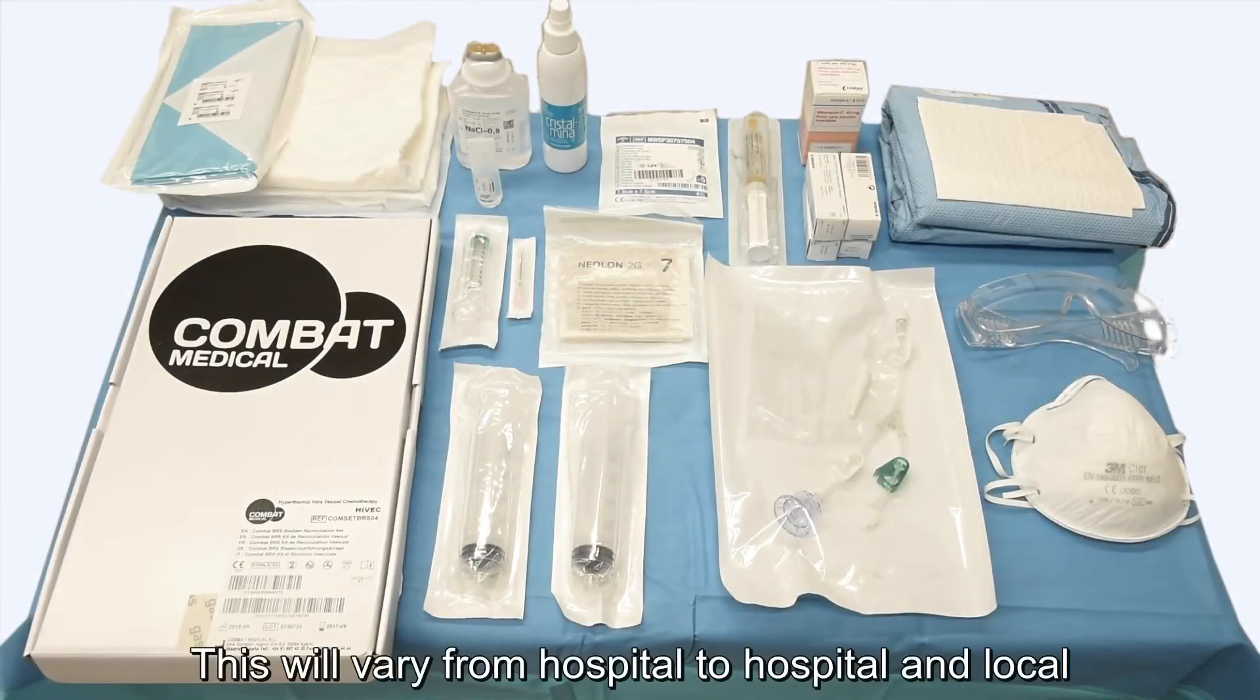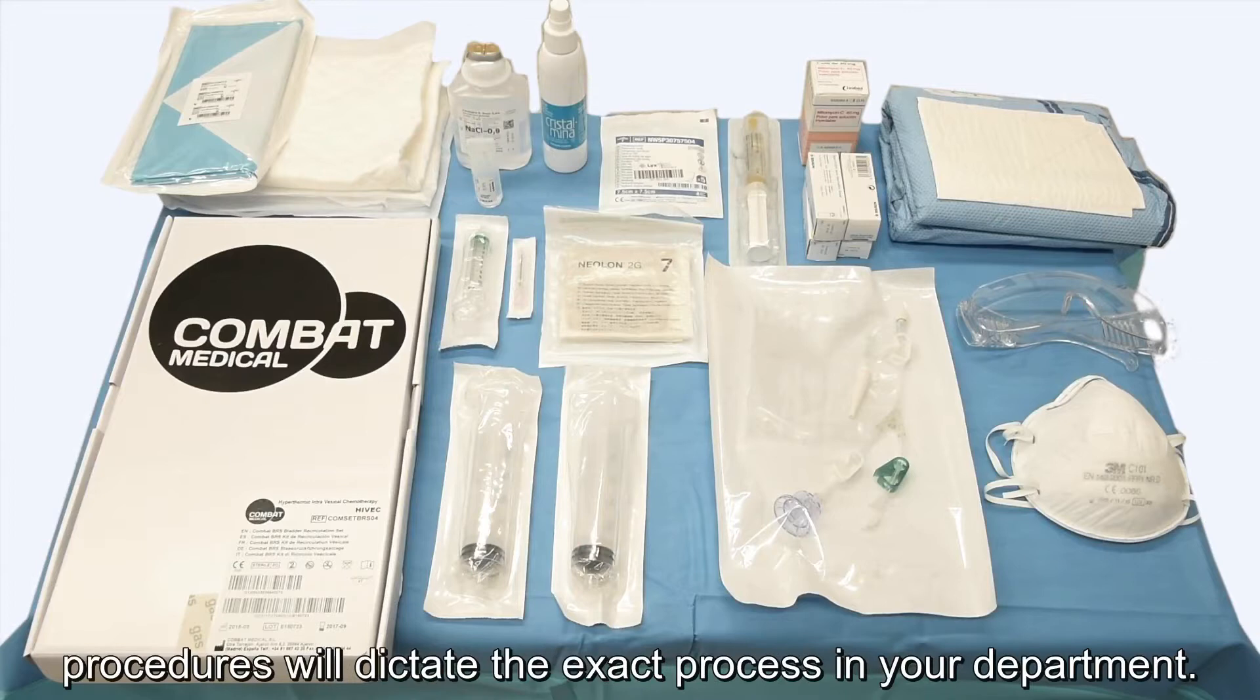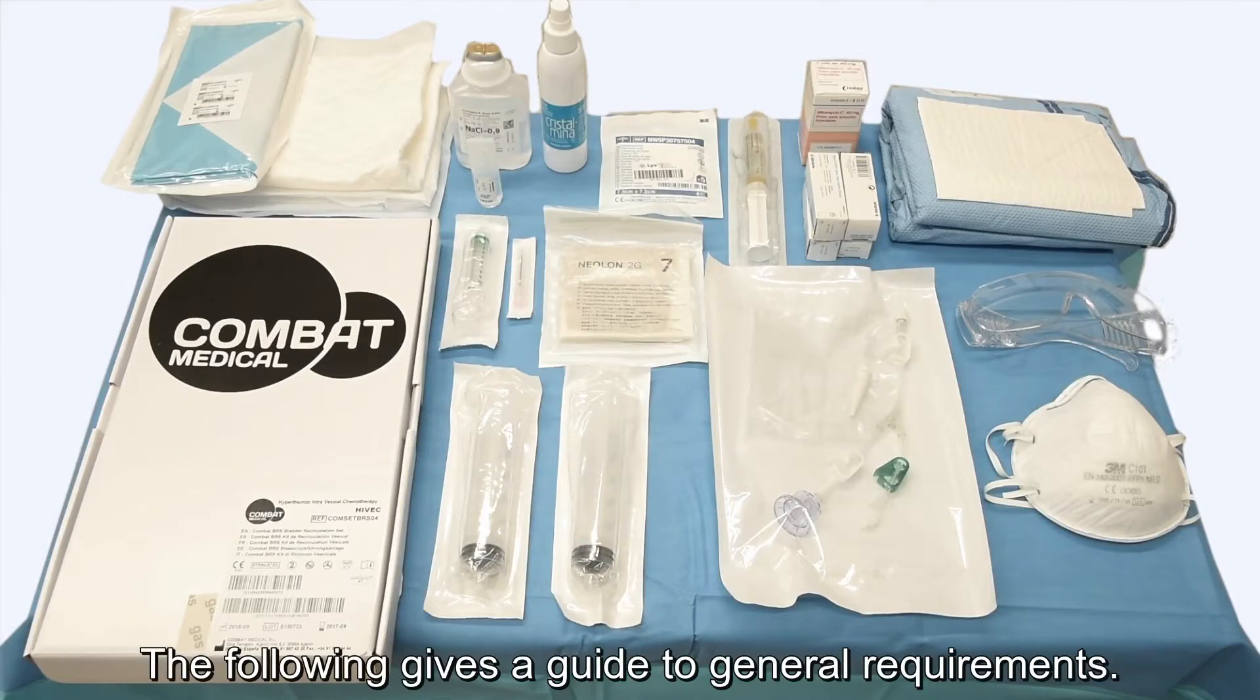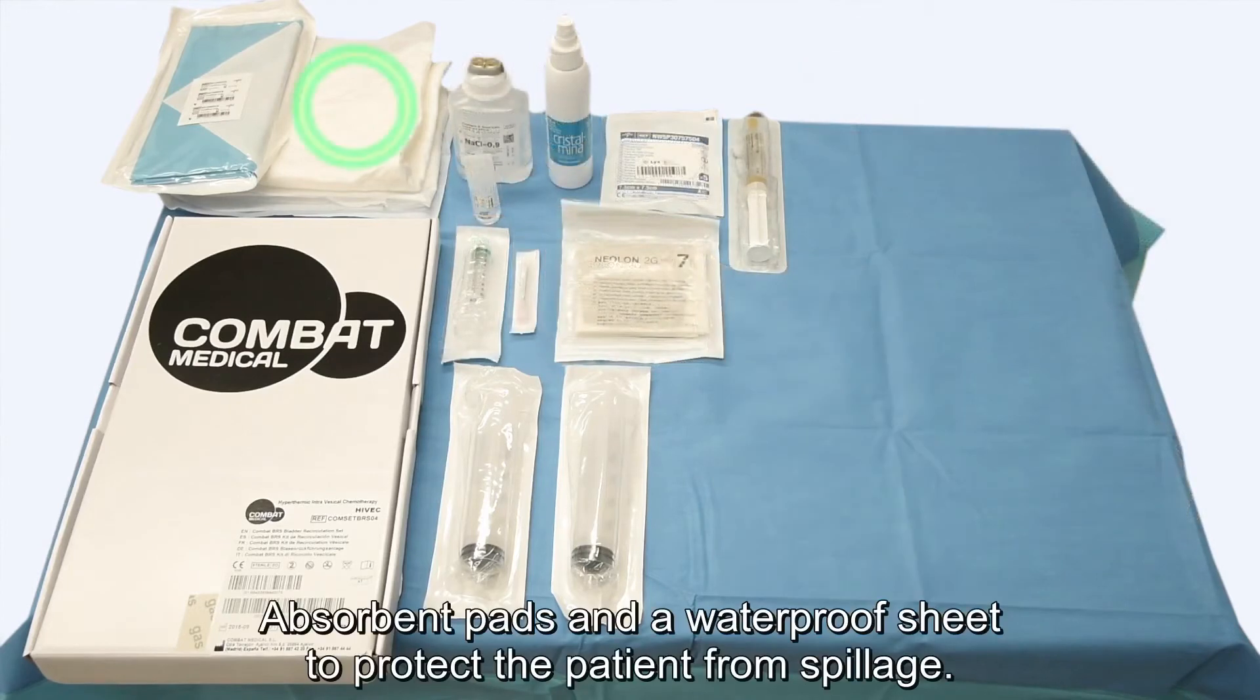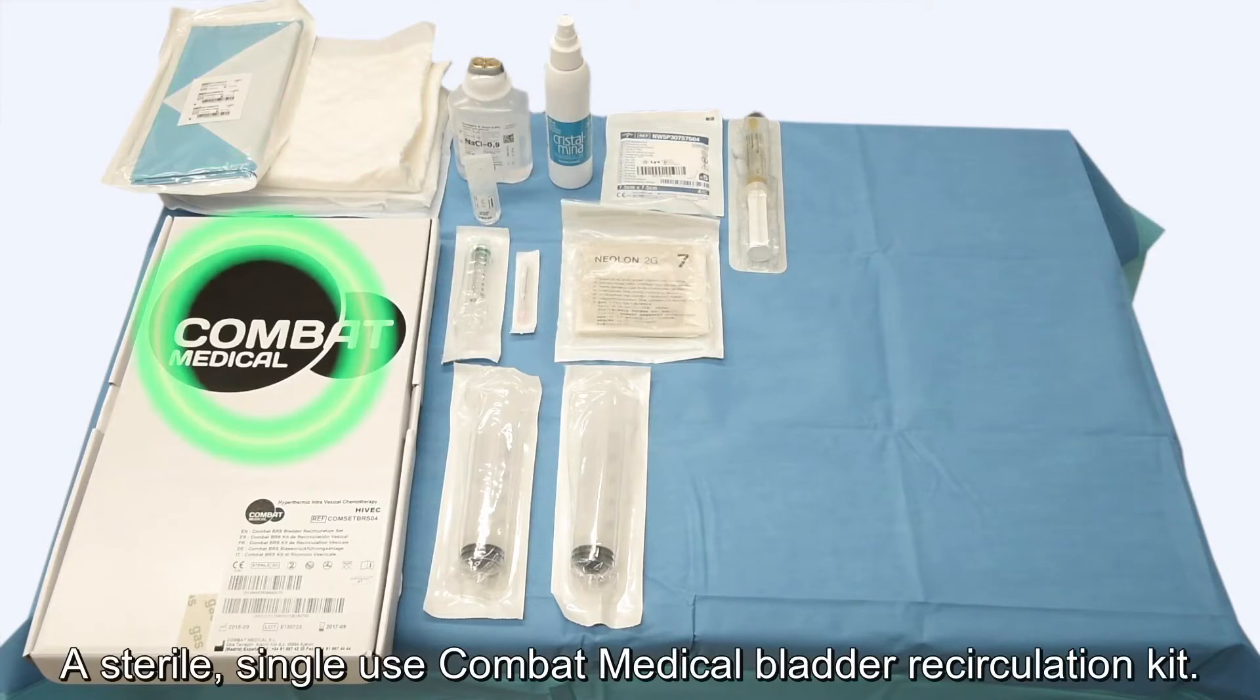This will vary from hospital to hospital and local procedures will dictate the exact process in your department. The following gives a guide to general requirements. Absorbent pads and a waterproof sheet to protect the patient from spillage. A sterile single-use COMBAT Medical bladder recirculation kit.